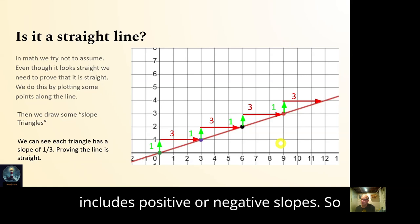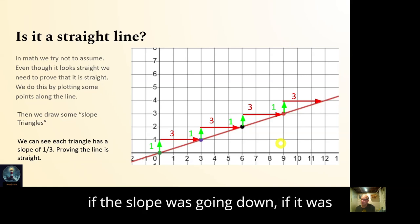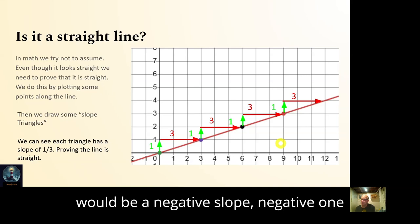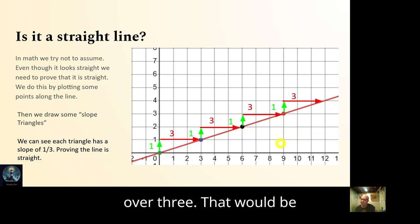That includes positive or negative slope. If the slope was going down at one third, that would be a negative slope — negative one over three.